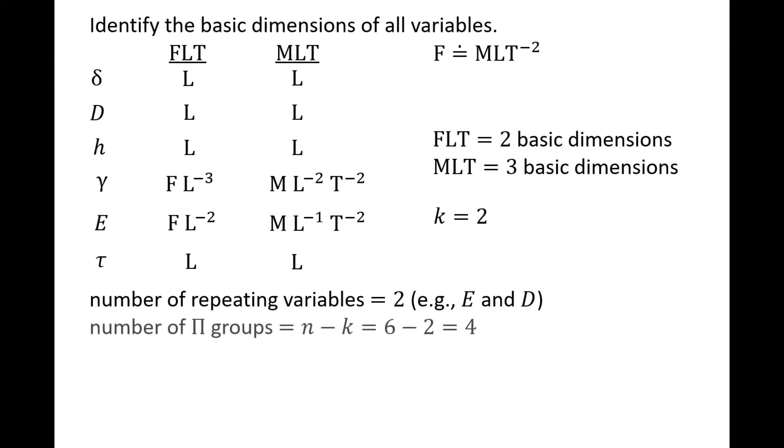The number of pi groups required to study this problem experimentally is determined by subtracting the number of reference dimensions from the number of variables. 6 minus 2 is 4, so 4 pi groups will be required.